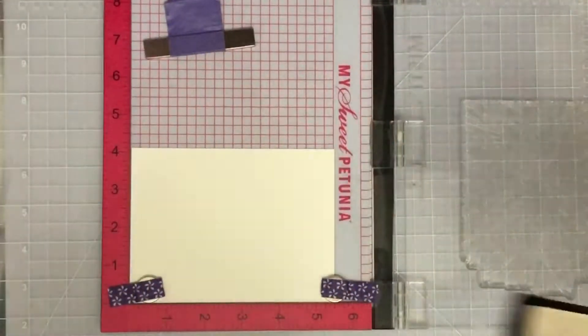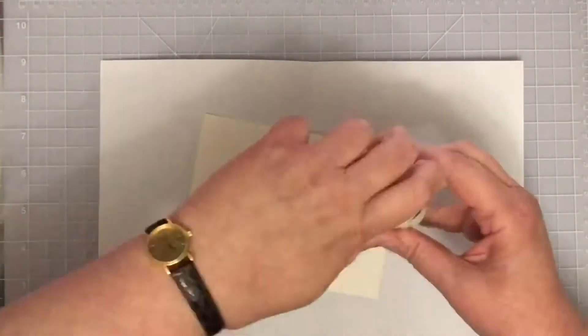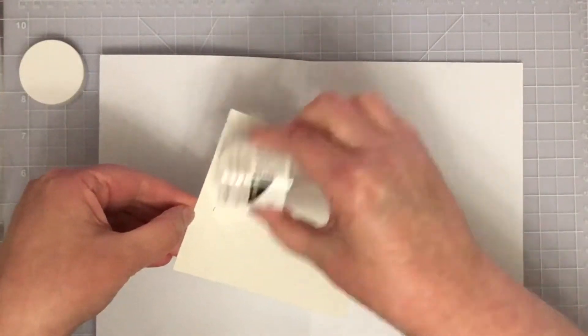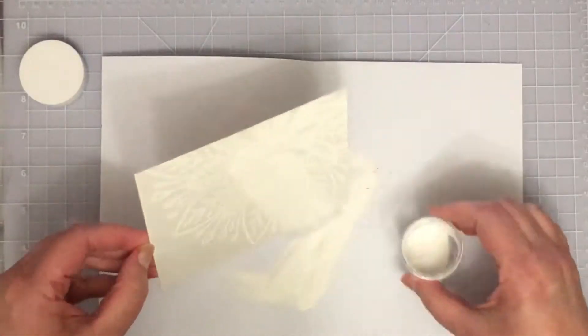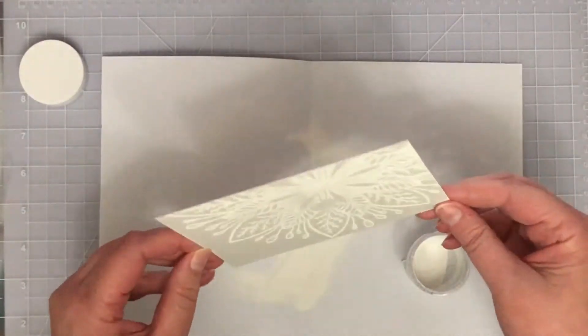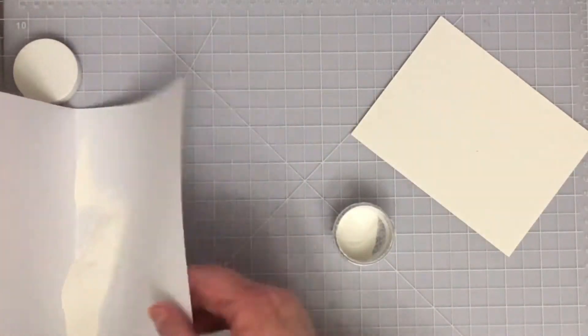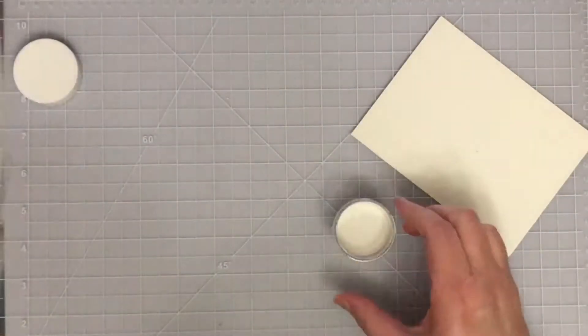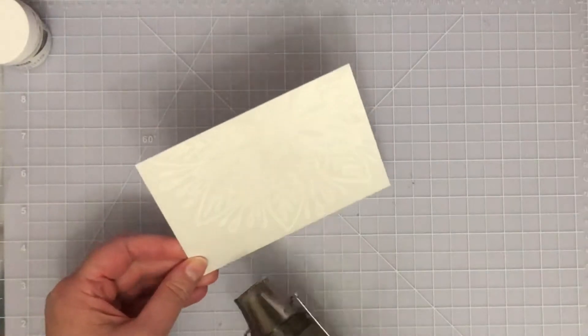I'm using Versamark ink for my stamping, a clear sticky ink, because I'm going to do some embossing over the top. I have some white embossing powder from Hero Arts. You can see there's still a bit in the middle that I missed because of this textured cardstock.